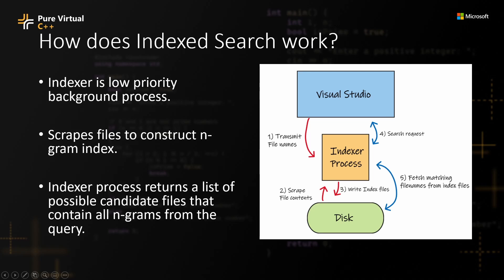VS is a foreground process, so it is given priority and allowed to take the resources it needs without competing too much with the indexer, which would have otherwise been in the same process. When the user performs a search, Visual Studio sends a search request to the indexer process. That indexer process uses the index files to fetch matching names, and then those names are transmitted back to VS, and VS does a brute force search on those. This approach allows us to quickly and efficiently index large amounts of content — potentially hundreds or thousands of megabytes worth of content — without using too much additional disk space or CPU. This set of trade-offs allows us to make a significant improvement in performance, eliminate up to 99% of the files from the search, all with minimal impact on the metrics that the customer cares about.